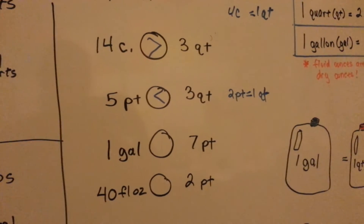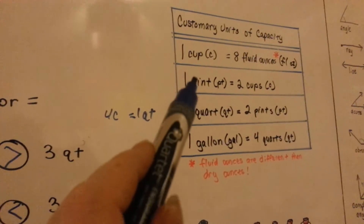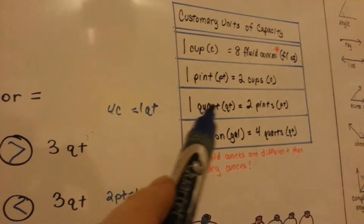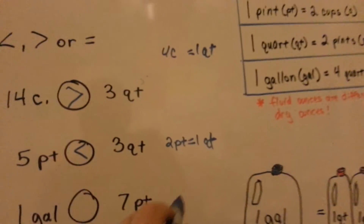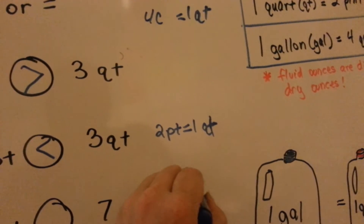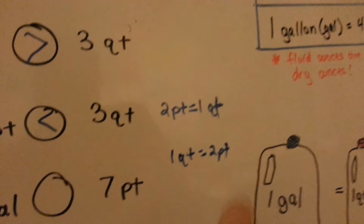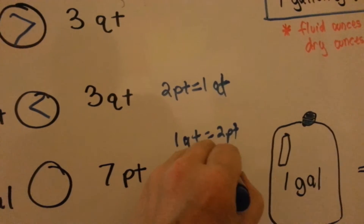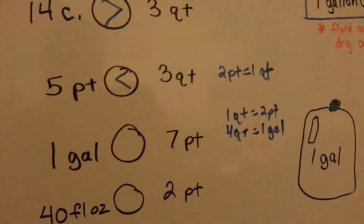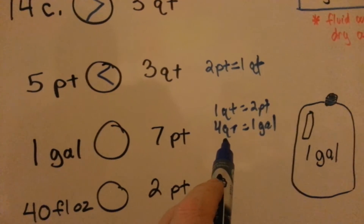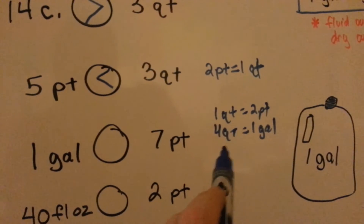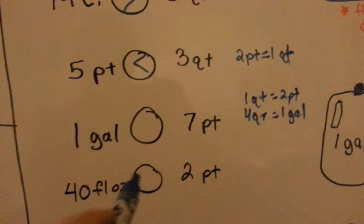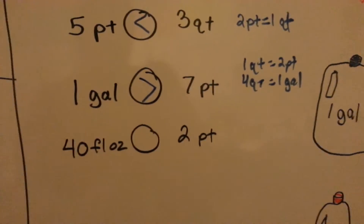Which is more: 1 gallon or 7 pints? How many pints are in a gallon? There are 2 pints in a quart, so 1 quart equals 2 pints. There are 4 quarts in a gallon. If 1 quart is 2 pints, how many pints is 4 quarts? We do 2 times 4, which is 8. So there are 8 pints in a gallon — the gallon is more. We had to multiply there.